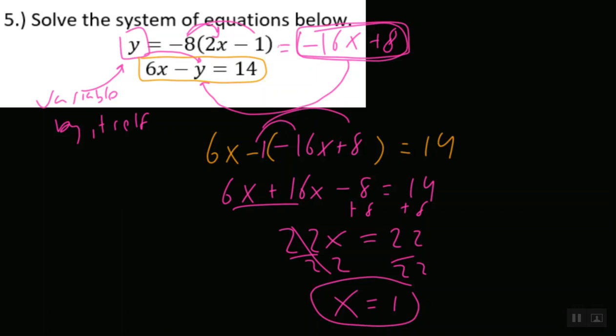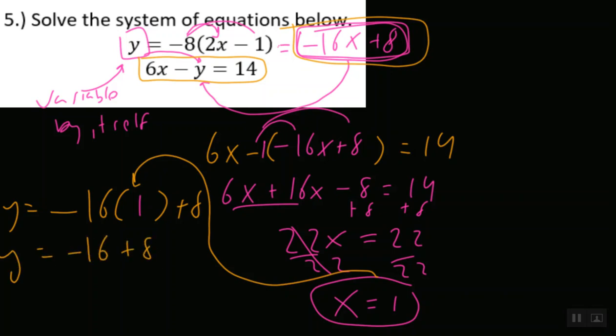Now remember, that's not quite good enough. We have to finish out the problem. So let's go ahead and take that original. Let's take that negative 16. Let's say y equals negative 16x plus 8. And let's go ahead and plug that in right there where x is 1. And we can say, well, y is equal to negative 16 plus 8. And y is equal to negative 8. So our answer is going to be 1 comma negative 8.